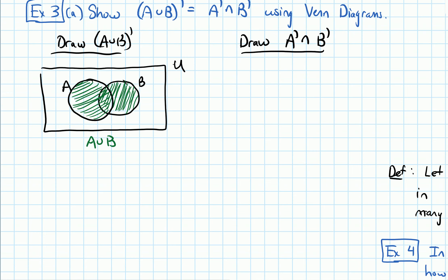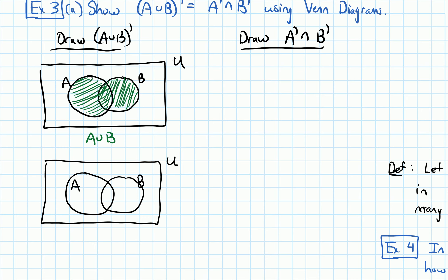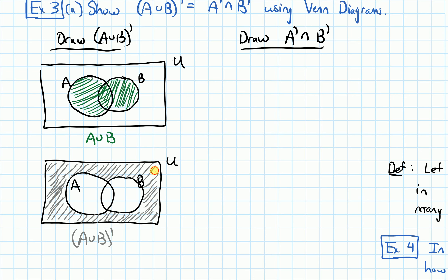Next, let's draw another Venn diagram with my universal set and those two circles for A and B. Now I'm going to draw the complement of the previous set. A union B complement means the stuff that's not in the union, so I have to shade the stuff that's outside the union — all of this stuff outside of both circles. That is the complement of A union B.